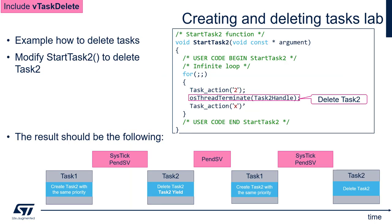As you can see, task 2 will be created each second, so we need to delete it fast enough to not stack our application. It will be the role of the start task 2 entry function. Within its endless loop, use the osThreadTerminate function with a handler to the task to be deleted — task 2 in our case. In the picture you can see the code flow for our example.